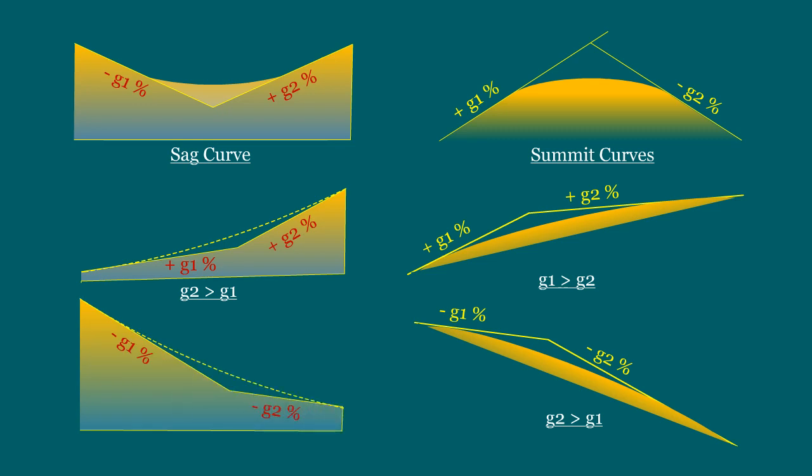And finally, the sixth is a negative grade G1 is followed by another negative grade G2. But here, the G1 is greater than G2.